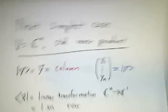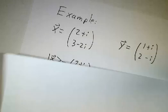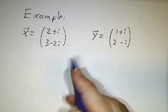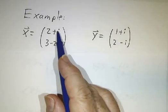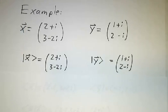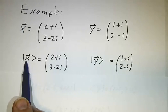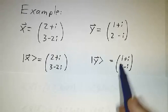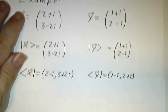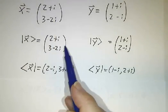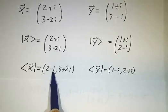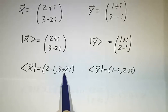Let's work an example in the vector space C2. Suppose x and y are vectors in C2 — just two complex numbers each. The ket for x is x, and the ket for y is y — no change. But to write the bra for x, you take the transpose and conjugate: you don't get 2+i, you get 2−i; you don't get 3−2i, you get 3+2i.